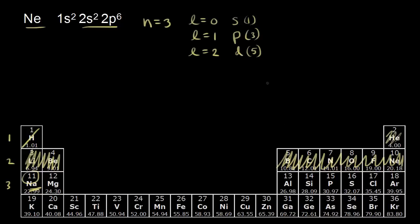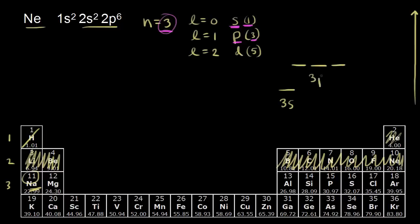If we plot those orbitals in terms of increasing energy, the 3s orbital is here. We're talking about the s orbital in the third shell, and there's one of them. Next we have three p orbitals in the third shell — one, two, and three. And finally we have five d orbitals. Those are at higher energy — one, two, three, four, and five.